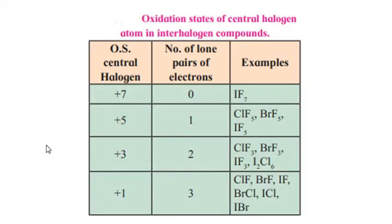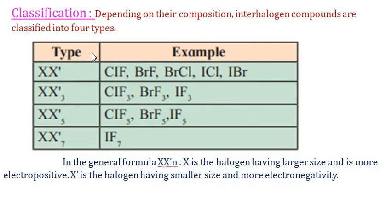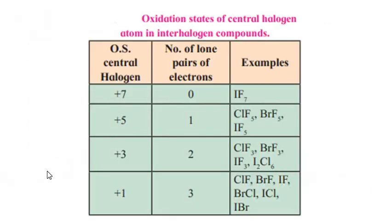The oxidation states of the central atom in interhalogen compounds are +7, +5, +3, and +1, corresponding to 0, 1, 2, and 3 lone pairs of electrons respectively. This classification chart shows examples for each type — XX', XX'3, XX'5, and XX'7.